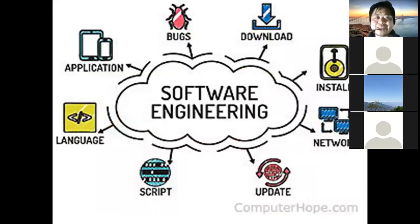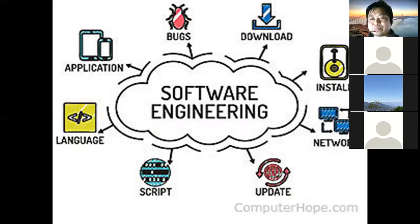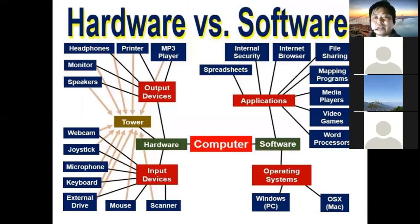What is software engineering? Download software, box, application, language, script, update, network — this is software engineering. This is the difference between hardware and software.